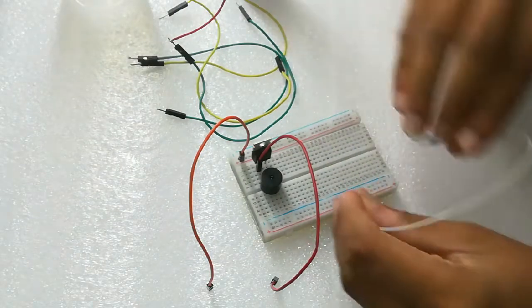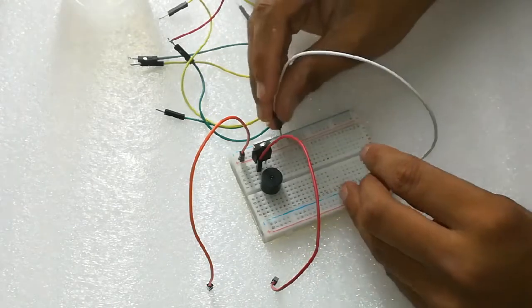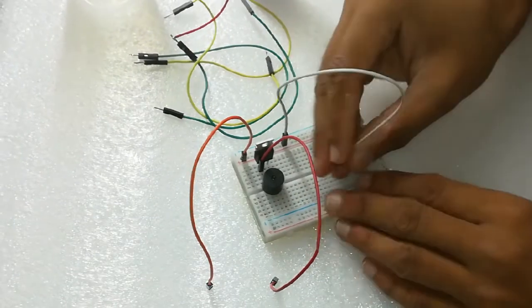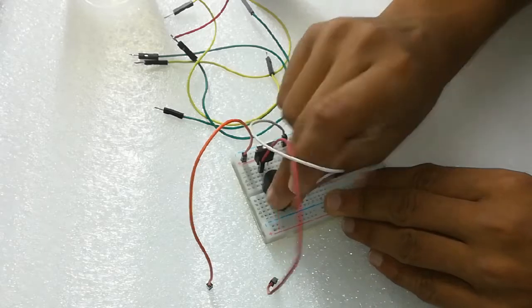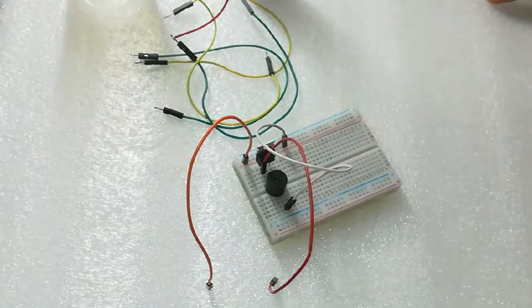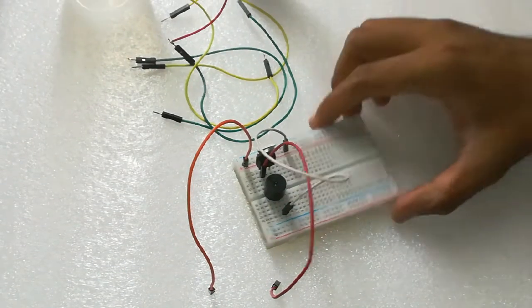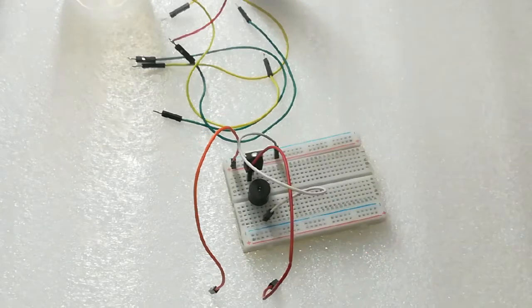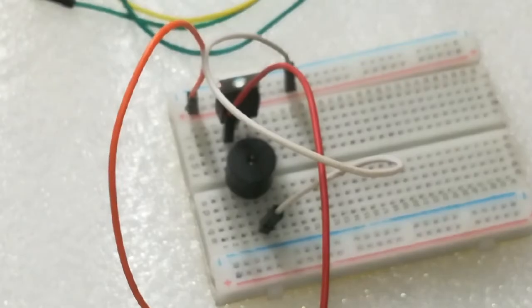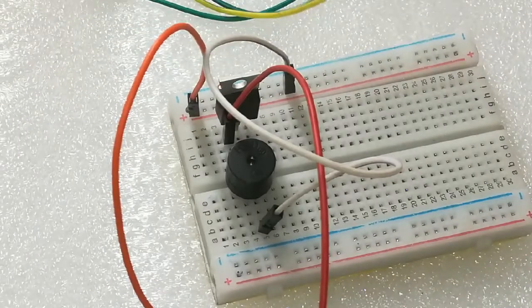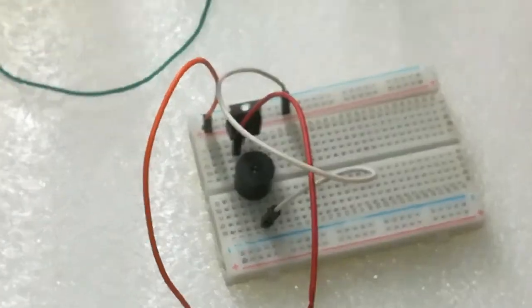We can connect the positive directly to the battery, meaning positive of your battery to the positive of your buzzer, like this. See, the positive of your buzzer is connected with the positive of your battery.